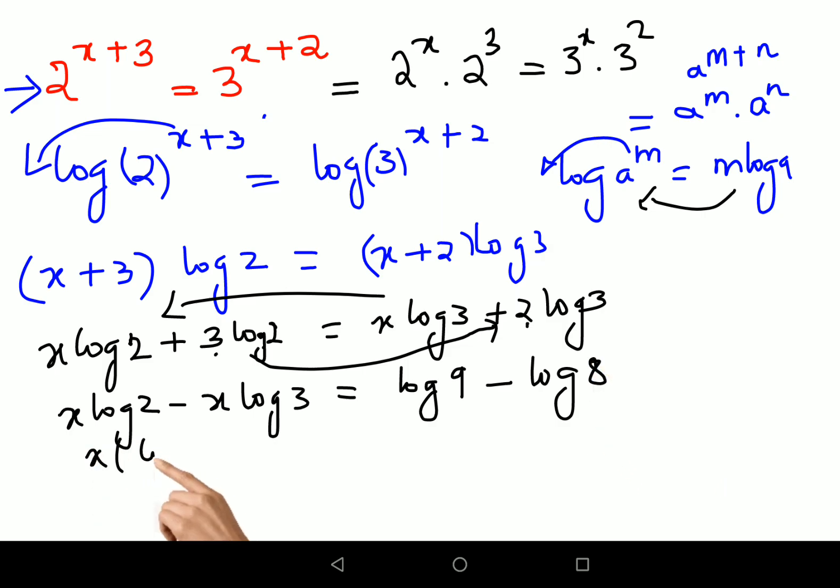Now what we'll do is we'll take x common and I'm left with log of 2 minus log 3 equals log 9 minus log 8.